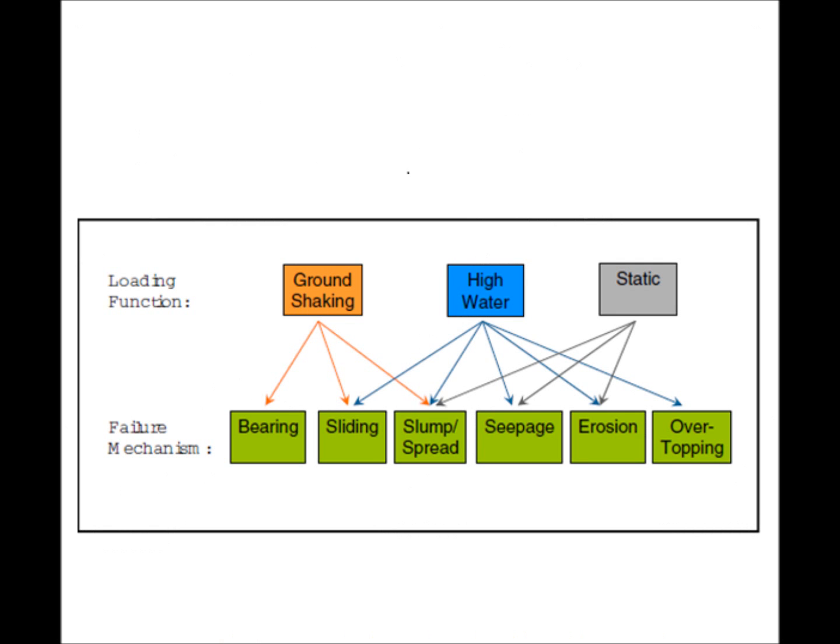Hi, my name is Kyle Schmidt and I will be talking about how the static integrity affects the levee failure rate. Levees are known to fail under one or more of the following loading situations: ground shaking from seismic activity, high water level and static stresses. Ground shaking failure is a result of a levee experiencing bearing, sliding, and/or slip spread of sediment.